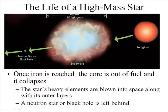Now, here's where it gets interesting. Once iron is reached in the core of the red giant, it's out of fuel and it collapses. But, then the star's heavy elements are blown into space along with the outer layers. So as it collapses, it explodes.